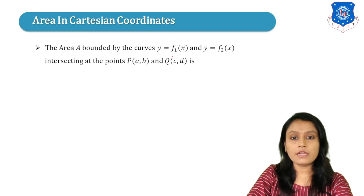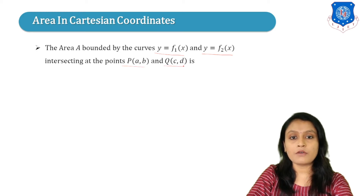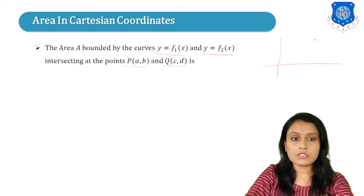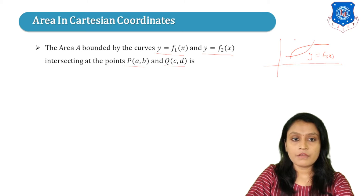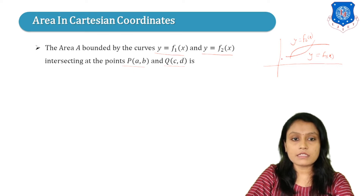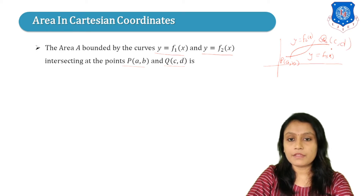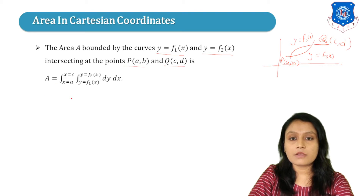The area A bounded by the curves Y equals F1 of X and Y equals F2 of X, intersecting at points P(A,D) and Q(C,D), is given by the double integration: A equals the double integral from A to C, with Y from F1(X) to F2(X), of dy dx.